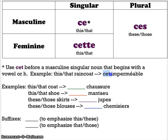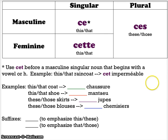Instead of saying ce imperméable, I say cet imperméable, and it just flows beautifully. This is a special form only for masculine singular nouns that begin with a vowel or an h.